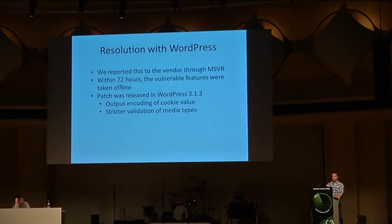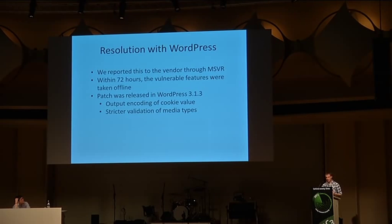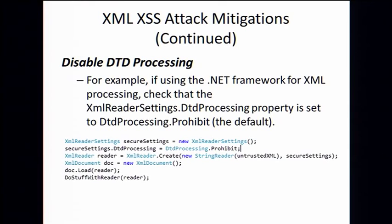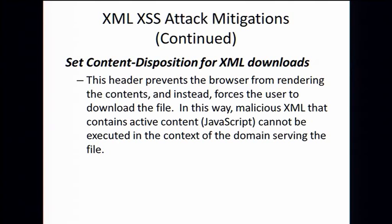The resolution with WordPress was super fast — we reported this to them and they had mitigations in place within 72 hours, and then a patch came out in 3.1.3. Mitigations for cross-site scripting are the same as always, and you probably shouldn't be echoing back exception messages anyway. Disable DTD processing — for a lot of reasons you probably shouldn't use DTD processing if you can avoid it, especially if the XML is untrusted. And one of those reasons is that cross-site scripting can happen. Set the content type — we would have had cross-site scripting earlier if the content type was not set on the JPEG files. So that's it, Jesse will sum it all up.